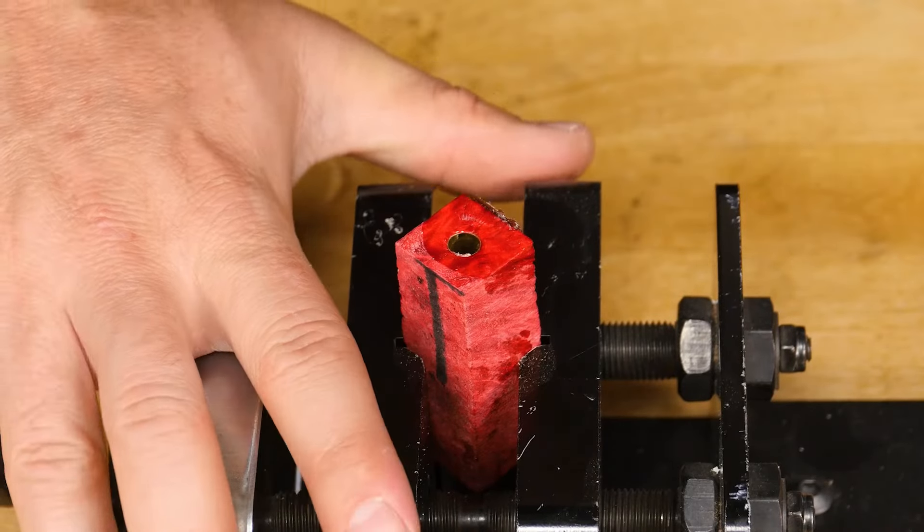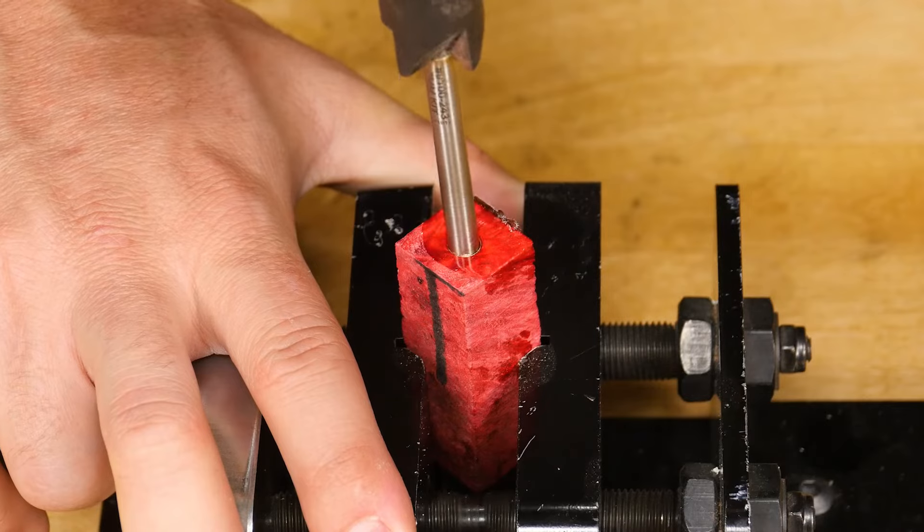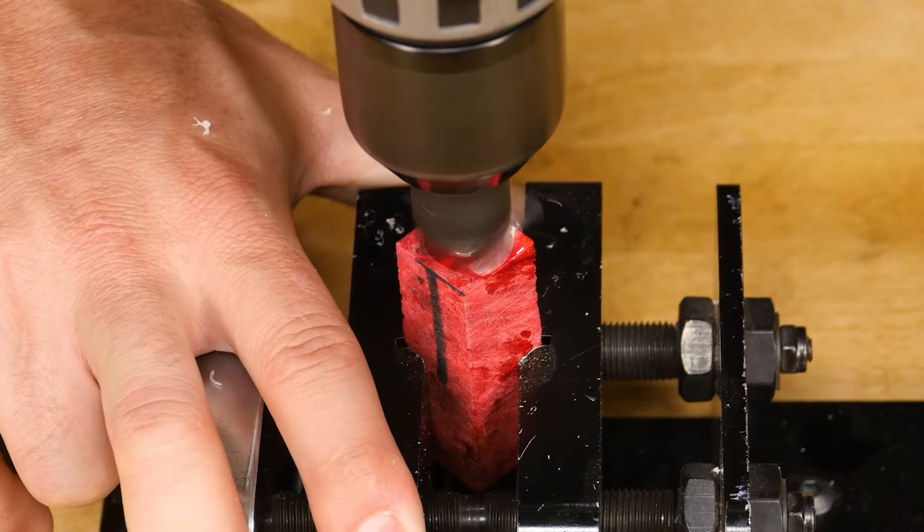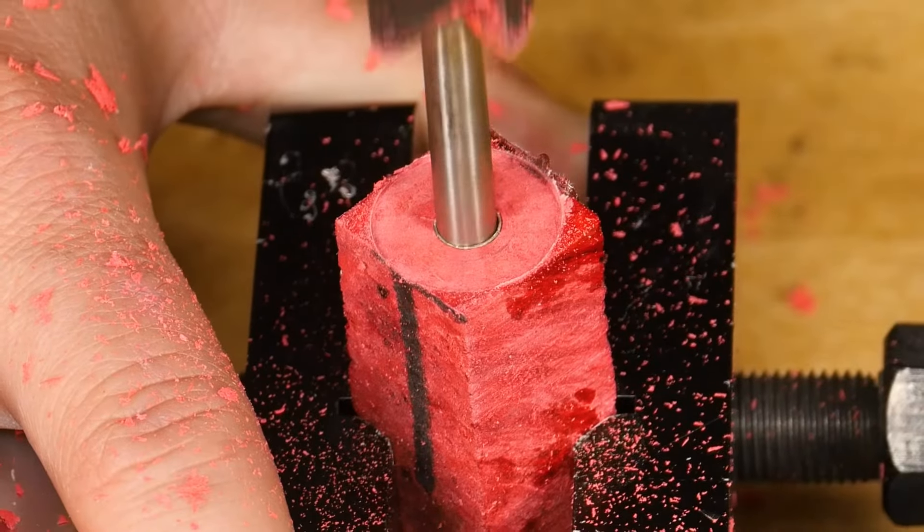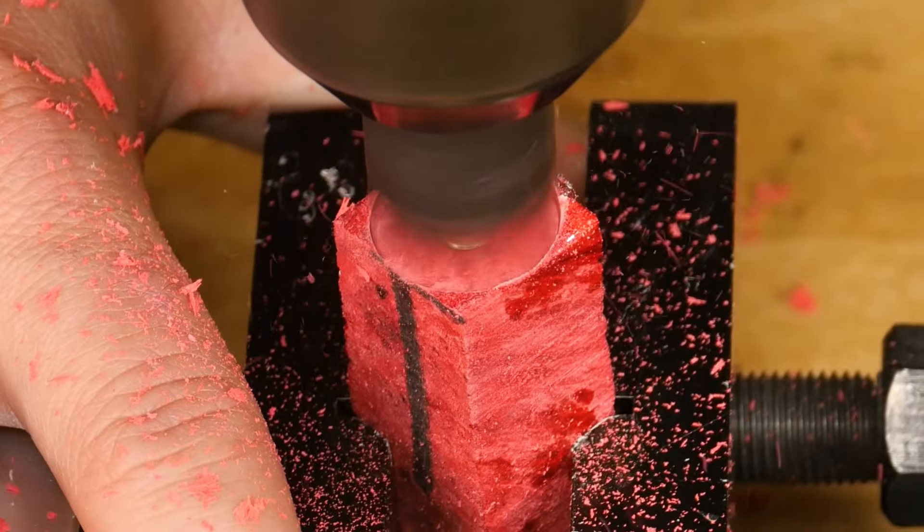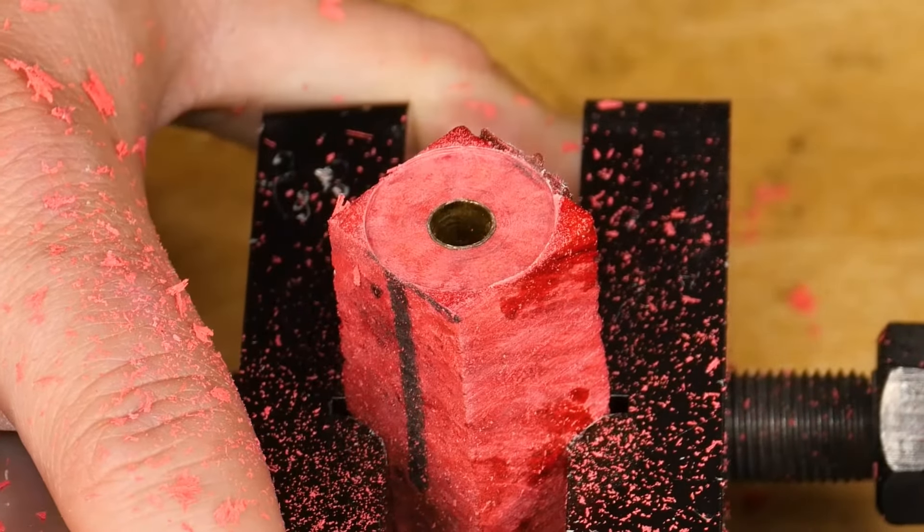Hold the blank in a vise while lightly cutting just until the tube is revealed. Don't cut too far or the pen will be too short, which will cause problems during assembly.